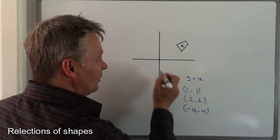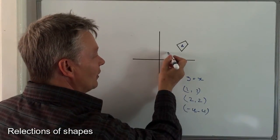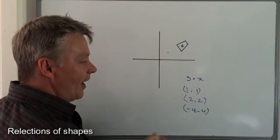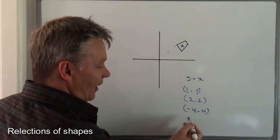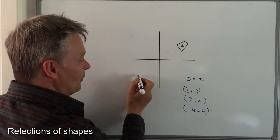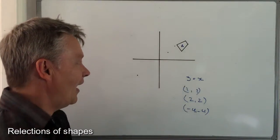So (1,1), I'm going to go along 1 and up 1, it's going to be about there. (2,2), up there, something like about there. (-4,-4), let's say it's about there.